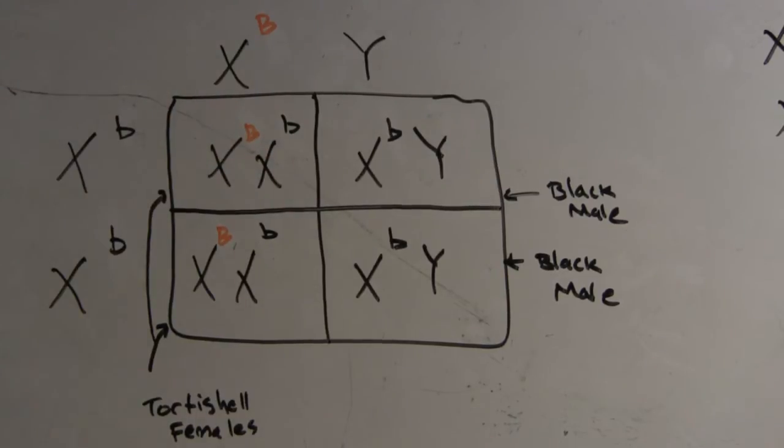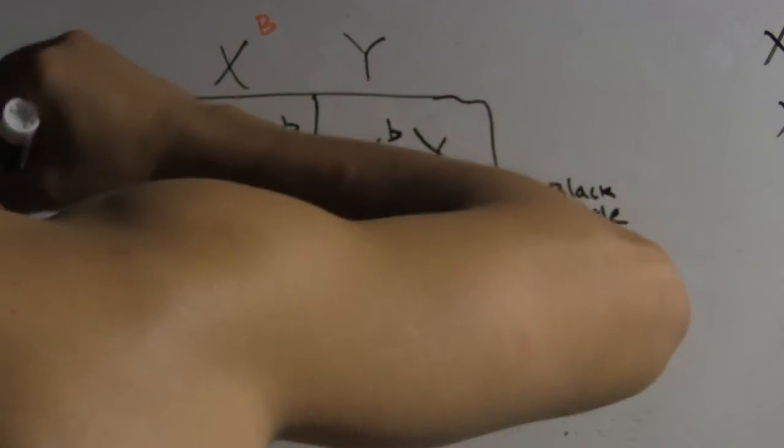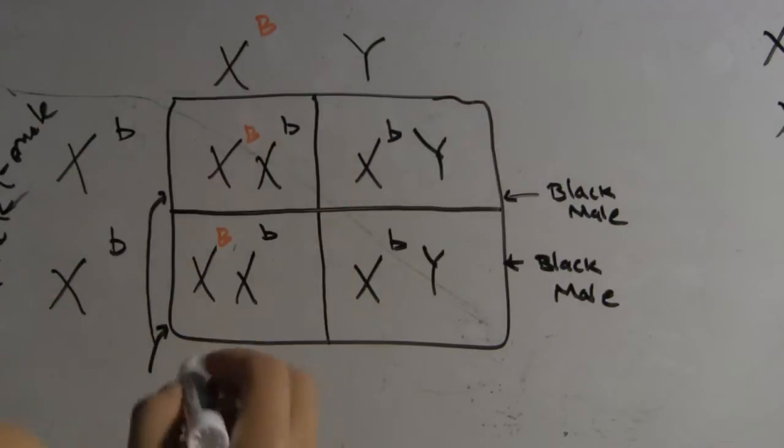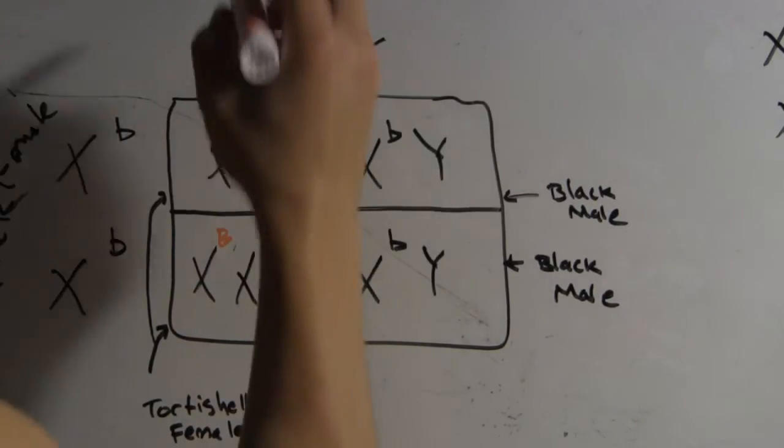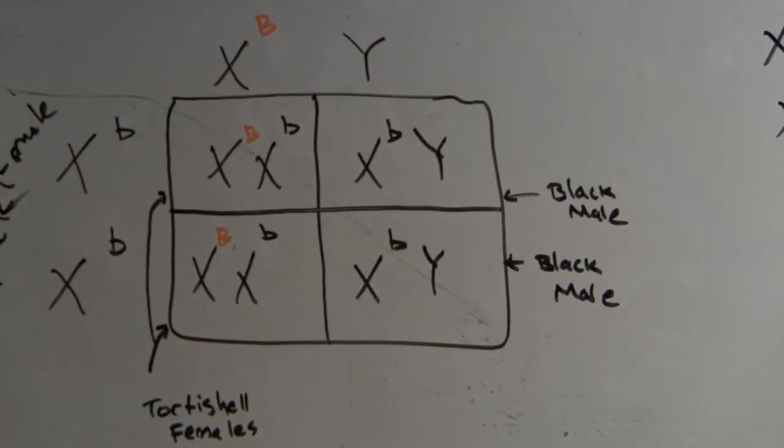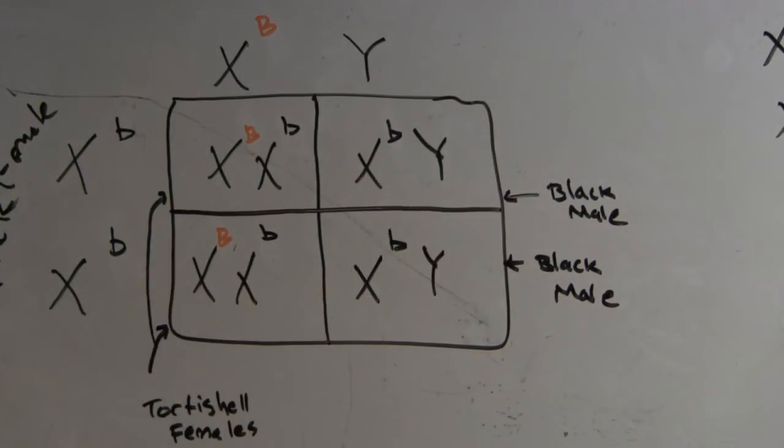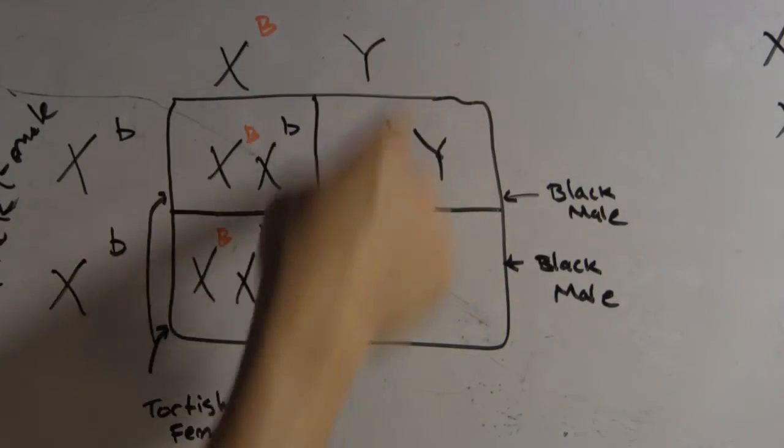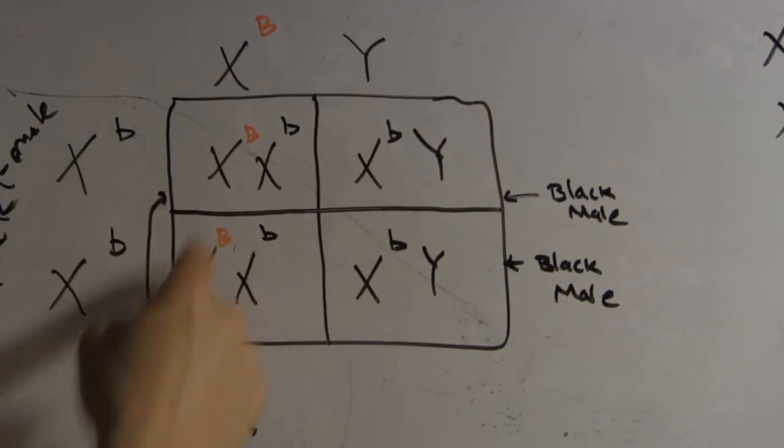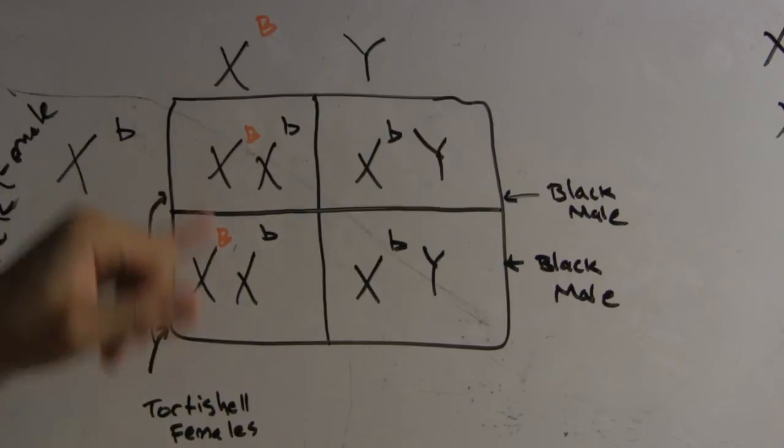And this is a ginger male. So a ginger male and a black female come together and mate, and they produce these four offspring, these four babies here. So the first babies are male. They're boys because they receive the Y chromosome from the male, and so they turn out to be boys. These receive the X chromosomes from the female and the X chromosome from the ginger male, so they turn out to be girls.